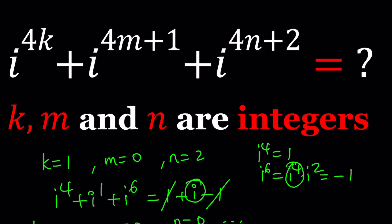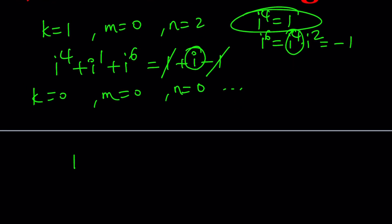Notice that 4k, 4m, and 4n are all multiples of 4. And what do you know about multiples of 4? Well, we just talked about it. i to the 4th power equals 1. So when you raise this to any integer power, because k, m, and n are integers, for example, if you raise this to the power k, this is going to be 1 again, because 1 to the power k is 1.